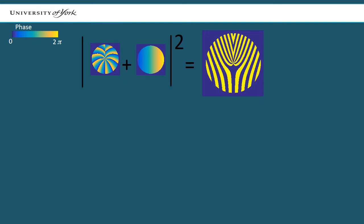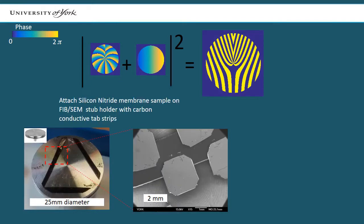2mm silicon nitride membranes with a layer of platinum deposited on top are then attached to a sample stub holder with adhesive carbon pads.